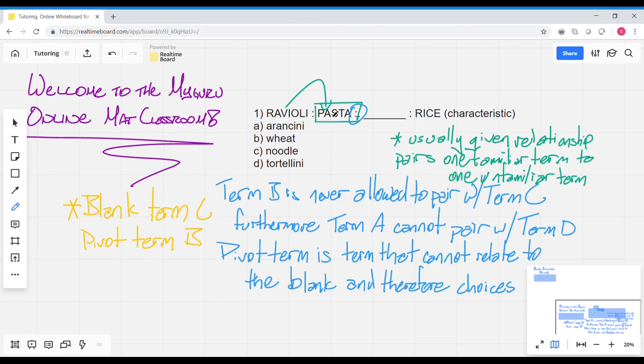Now, the key here is to articulate as best you can what the specific relationship is between ravioli and pasta. And if you know it, you know that we can just say ravioli is a stuffed pasta basically. So we're looking for an answer choice that is going to be a stuffed rice.